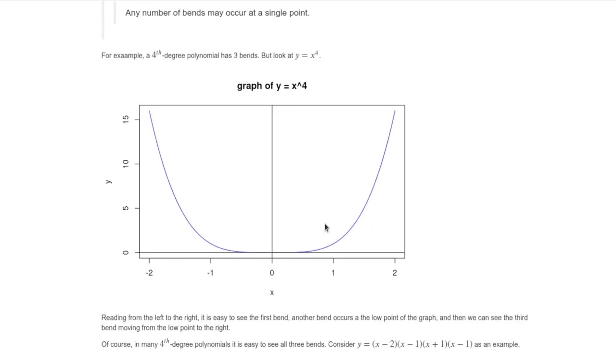An important caveat to this is that some of the bends can happen at just one point. For example, x to the fourth power, it looks like it only has one bend. But really what's happening is it bends up here and then there's a bend down right there at the zero. And then it bends up again.